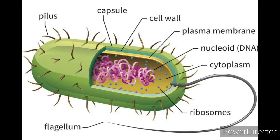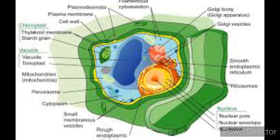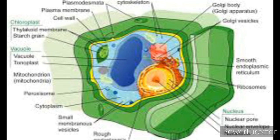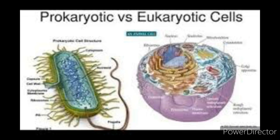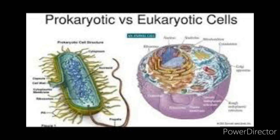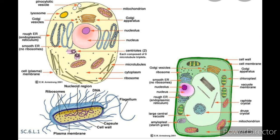A typical example of a prokaryotic cell is a bacterial cell. Within bacteria, there is no nucleus, but the genetic material is located in a region called the nucleoid. In a eukaryotic cell, a well-defined nucleus can be seen, surrounded by a porous nuclear membrane. In prokaryotic cells, membrane-bound organelles are also absent — mainly mitochondria, lysosomes, endoplasmic reticulum, Golgi apparatus, and vacuoles are absent. But in eukaryotic cells, all membrane-bound organelles are present. A typical example of a eukaryotic cell is a plant cell or animal cell.